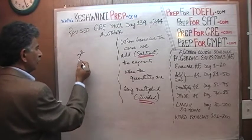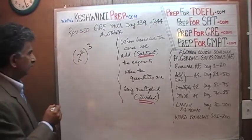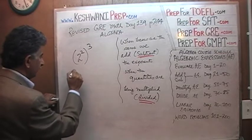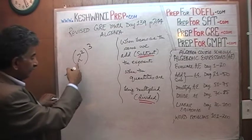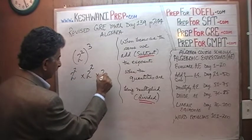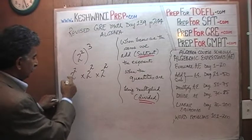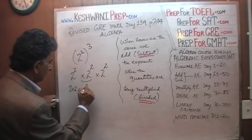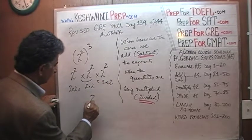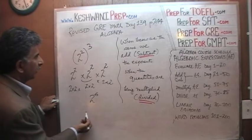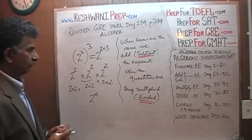For example, 2 squared raised to the third — what's going on is that 'raised to the third' means whatever quantity is in the parenthesis, we multiply it by itself three times. That means 2 raised to 2, times 2 raised to 2, times 2 raised to 2 — giving us 2 raised to 6. The quicker way is simply to multiply the exponents: 2 times 3 equals 2 raised to 6.